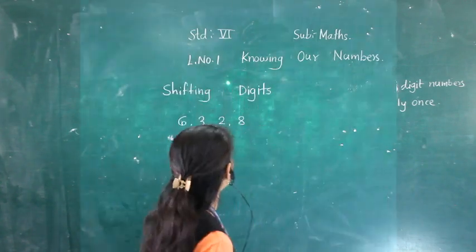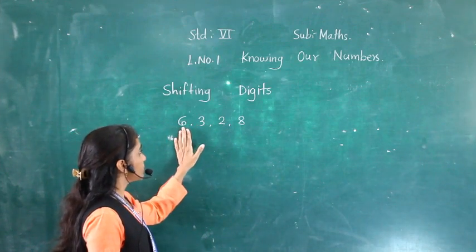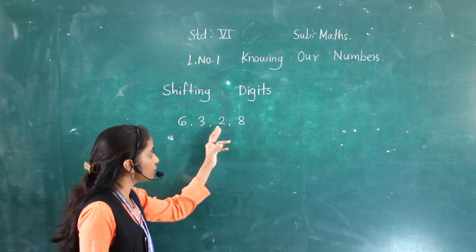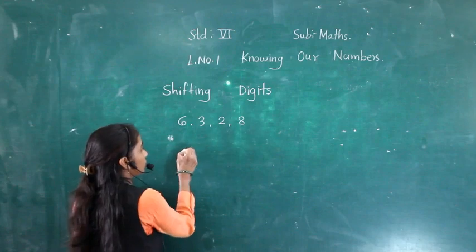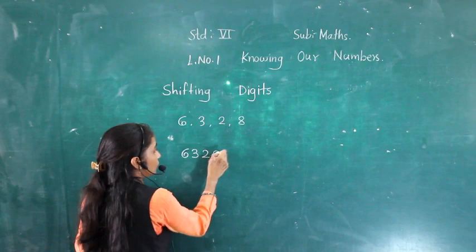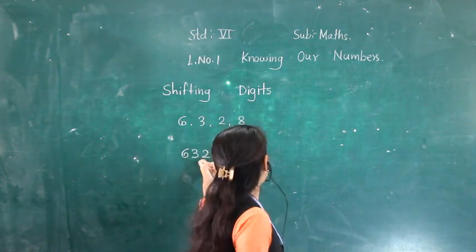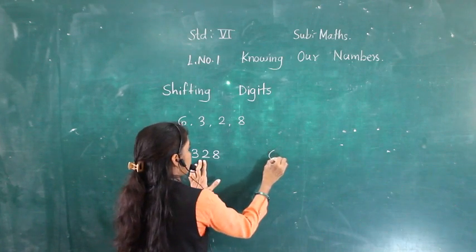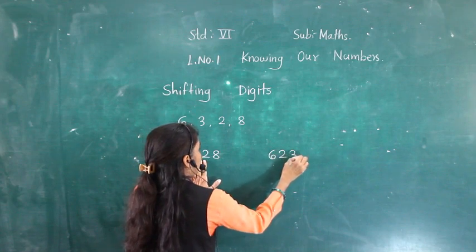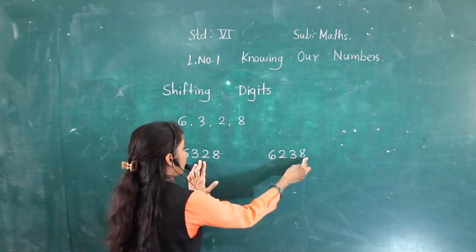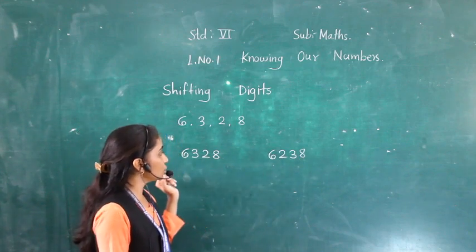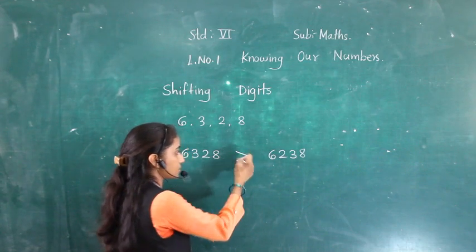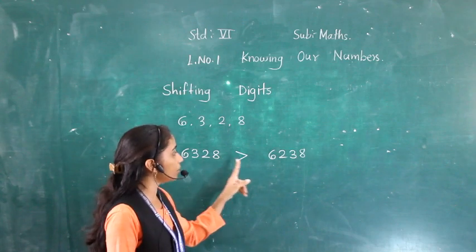Let's move to a new concept: shifting digits. Suppose the given number is 6320. If we interchange the digits 3 and 2, the number becomes 6230. Now we compare the two numbers. 6320 is the greatest number among the two.